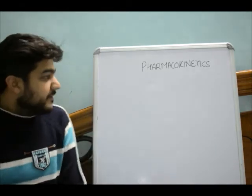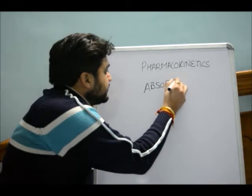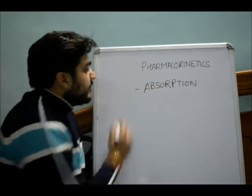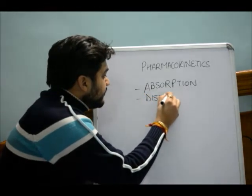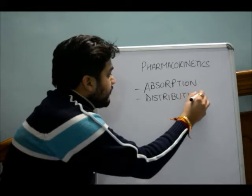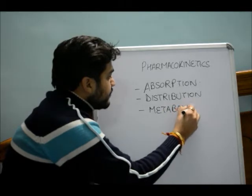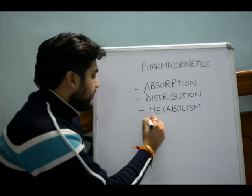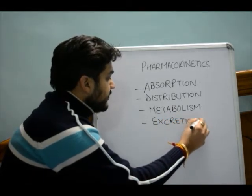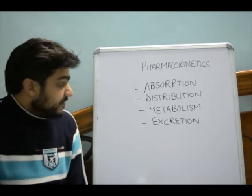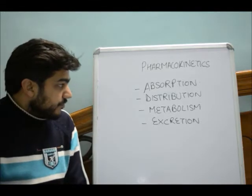Pharmacokinetics can be divided into four processes: the first is absorption, the second is distribution, the third is metabolism, and the fourth is excretion. We will be discussing pharmacokinetics under these four headings.